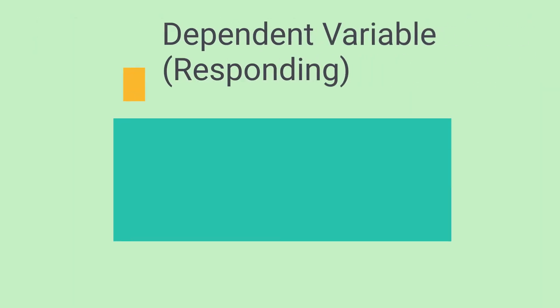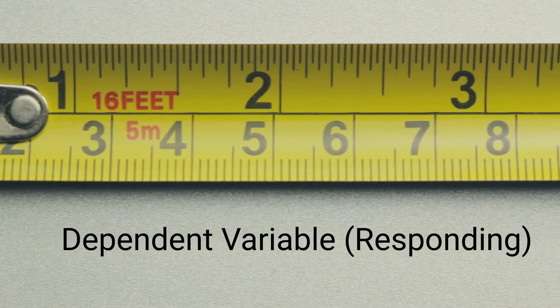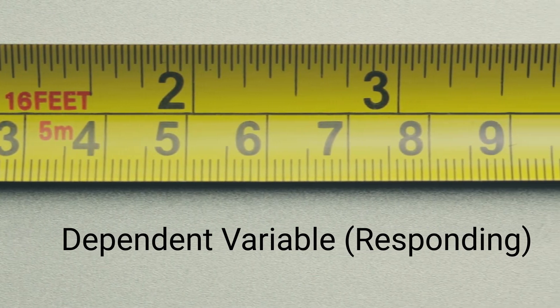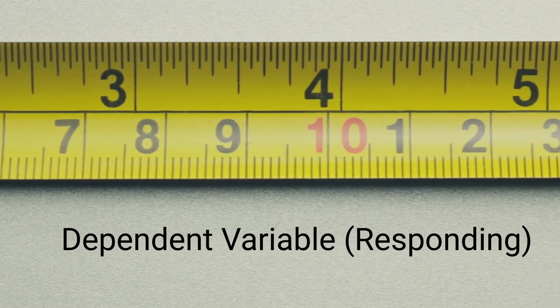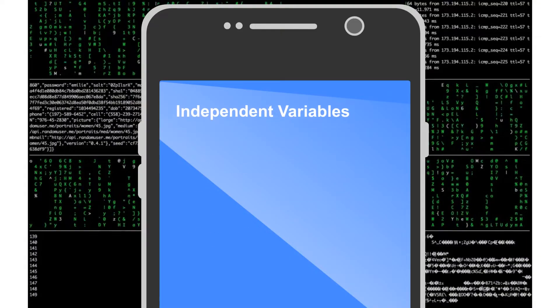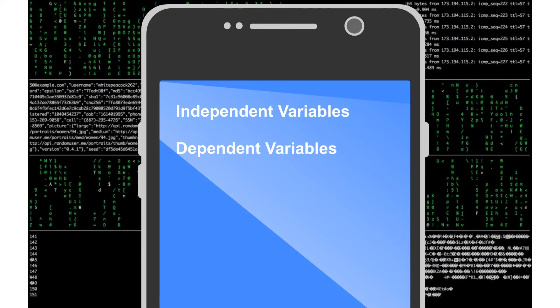The dependent variable, which is also called the responding variable, depends on the independent variable. It is the variable you are measuring. In simple terms, the dependent variable is what you measure. Let's look at some examples and see if we can understand the difference between independent and dependent variable a little bit better.